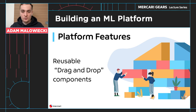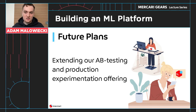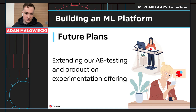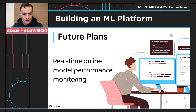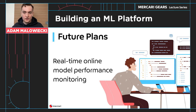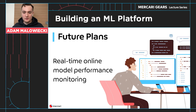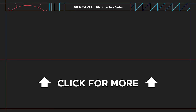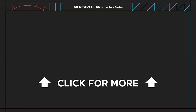We want to extend our A/B testing frameworks and production experimentation so we can track experiments in real time and see the efficacy of our experiments - doing solid, reproducible, and trackable data science. We also want real-time online model performance monitoring so we can monitor model performance on a dashboard and make sure our models are doing what we expect. That's all for my talk on the machine learning platform - thank you very much for listening and stay tuned for the next Mercari Gears lecture.